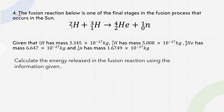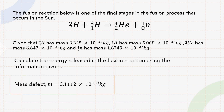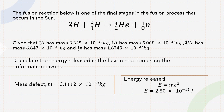Now let's try solving the next question on your own. It is about nuclear fusion — specifically, one of the final stages in the fusion process that occurs in the sun. The formula is given, and the masses of the reactants and products are also provided. The mass defect works out to 3.1112 times 10 to the power of negative 29, and using E equals mc squared, the energy released is 2.80 times 10 to the power of negative 12 joules. Did you get the same answer?